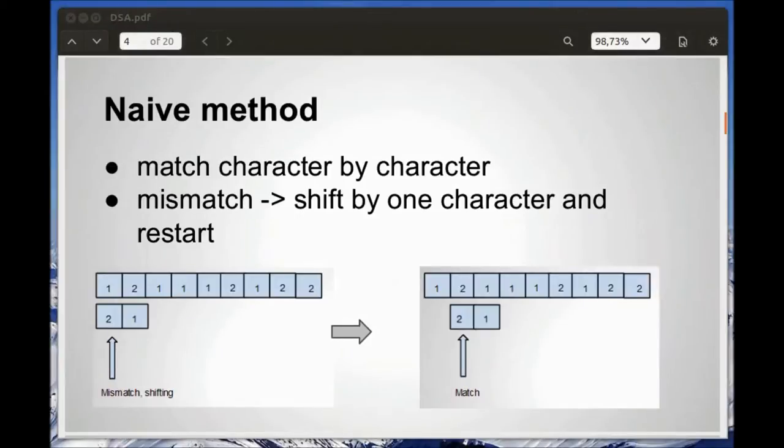The Naive method is perhaps the one that comes first to mind when thinking about this problem. The idea is to match the pattern against the text character by character. Should a mismatch occur, shift the whole pattern by one to the right and start again.